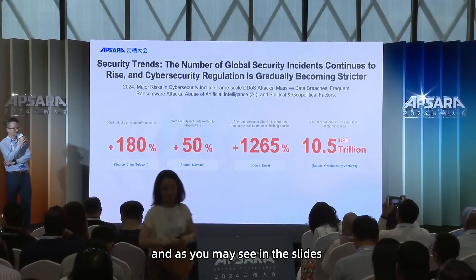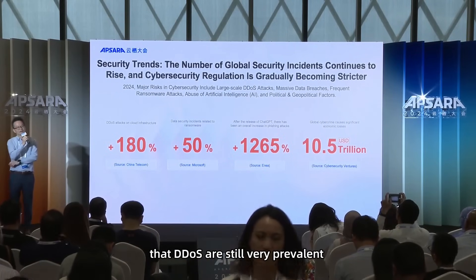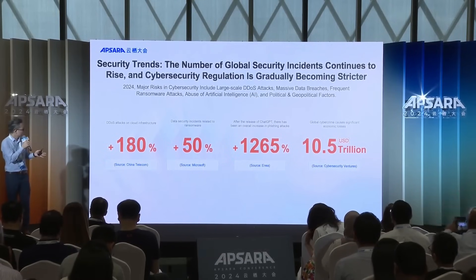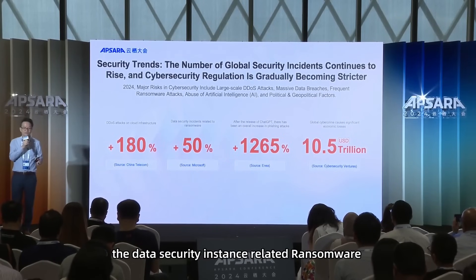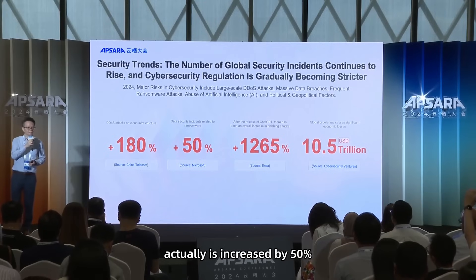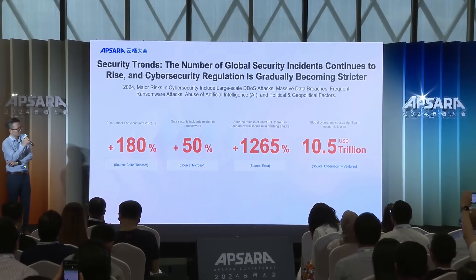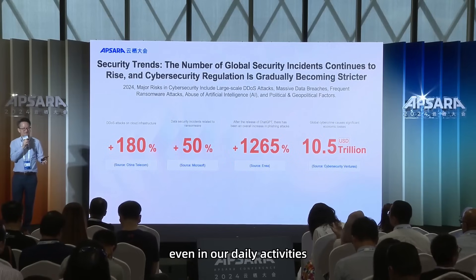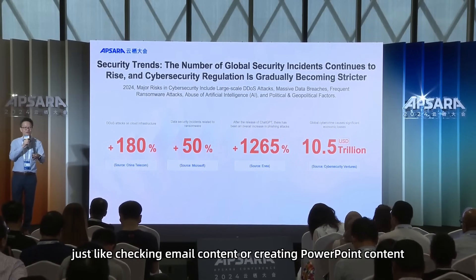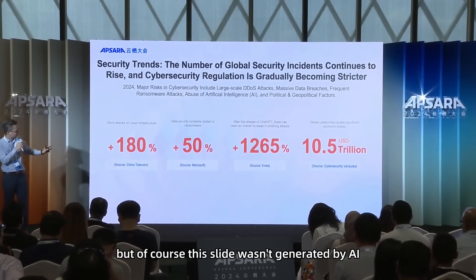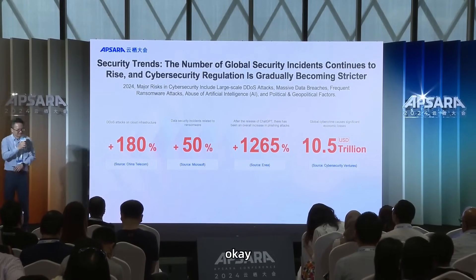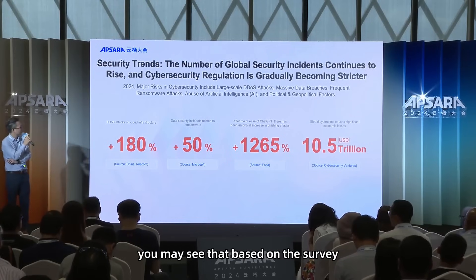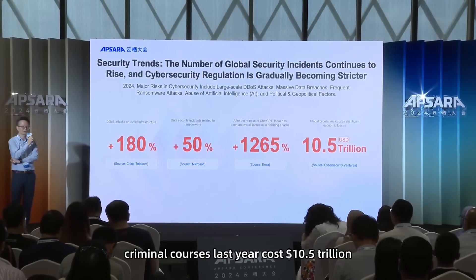As you may see in the slides, DDoS attacks are still very prevalent targeting cloud infrastructures. Data security incidents related to ransomware have increased by 50 percent. AI technology is being mass-adopted across different industries, even in daily activities like generating email content or PowerPoint content. And lastly, based on cybercriminal costs in recent years, cybercrime would cost 10.5 trillion US dollars.